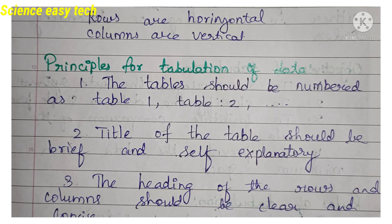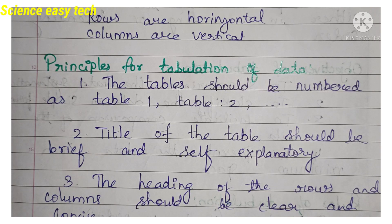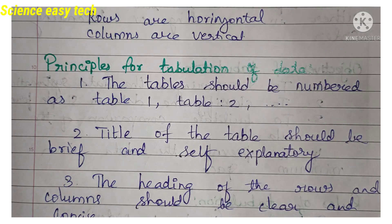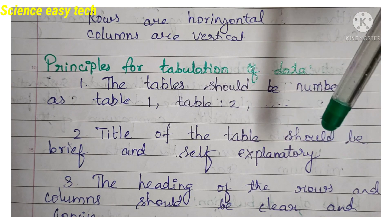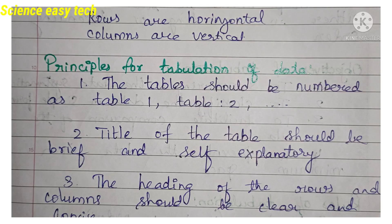The title should be brief, clear, and concise. When you are reading the table, there is no need for additional explanation from other experts — by reading it yourself, you should be able to understand it. It should be self-explanatory. Next, the third point: the heading of the rows and columns should be clear and concise.